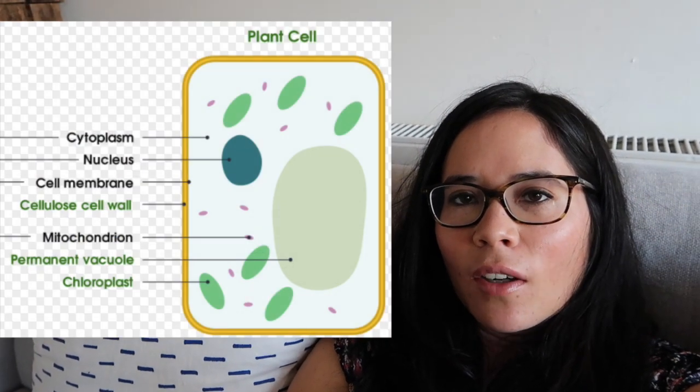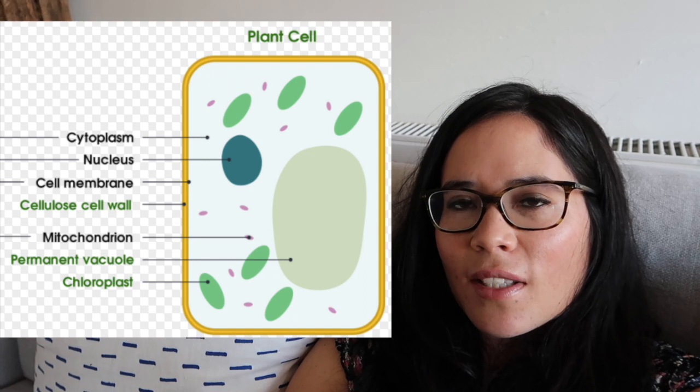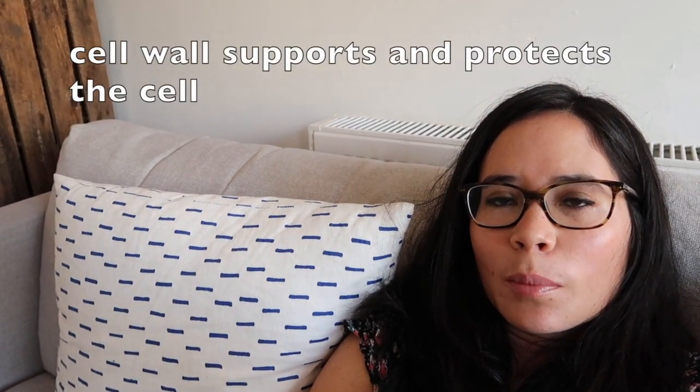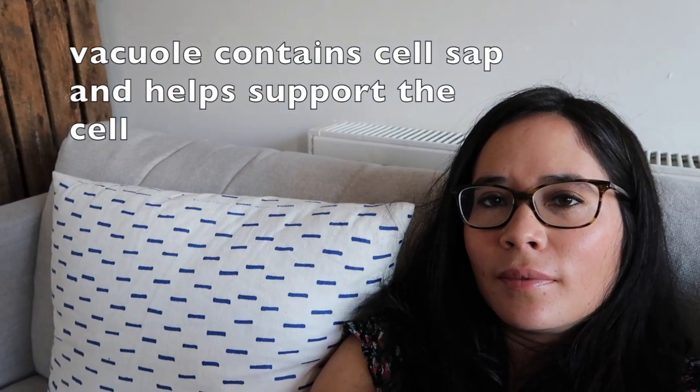Let's go on to the plant cell now. The plant cell has all the organelles mentioned in the animal cell, but it has three additional parts. First of all, what's the role of the cell wall? The cell wall supports and protects the cell. What's the role of the vacuole? The vacuole is full of cell sap, which also helps support the cell.